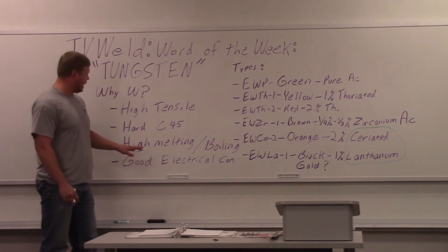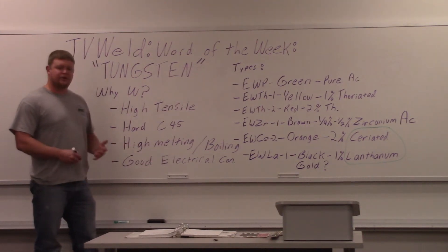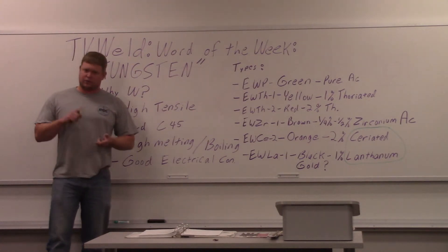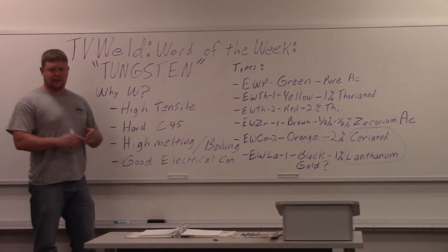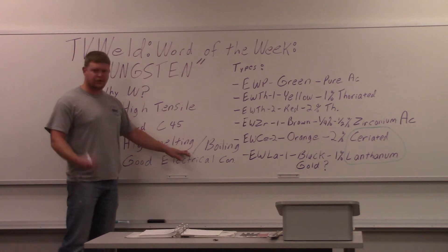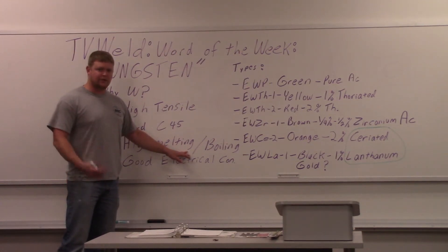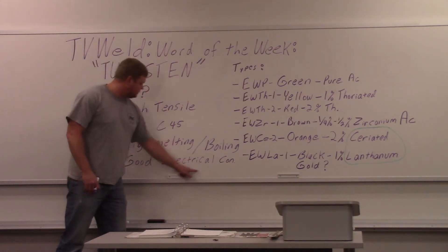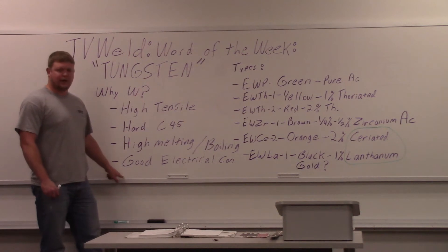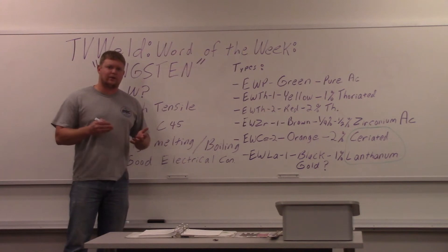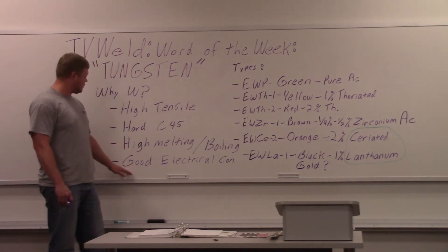The high melting temperature is critical because you have a super concentrated arc coming off a tungsten that's usually 1/16", 3/32", or 1/8" in diameter depending on the material you're welding. If it didn't have a high melting temperature, it would just melt down into the weld. Good electrical conductivity is another major reason — without it you'd have a lot of resistance, and again, the tungsten would go down into the weld.